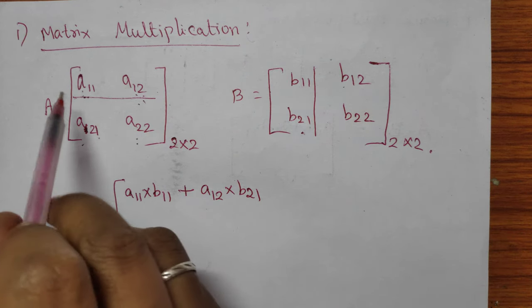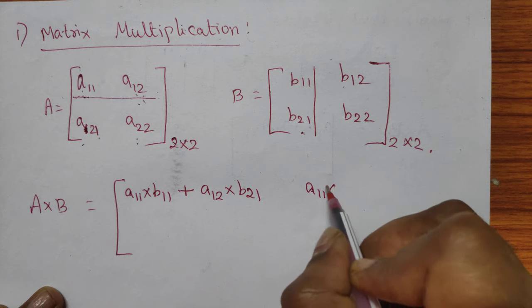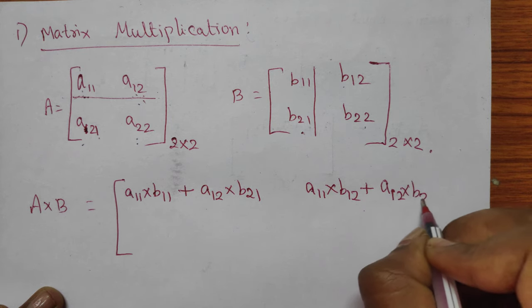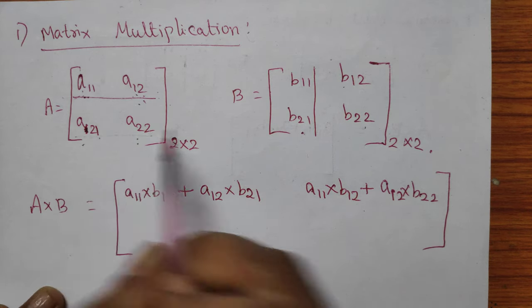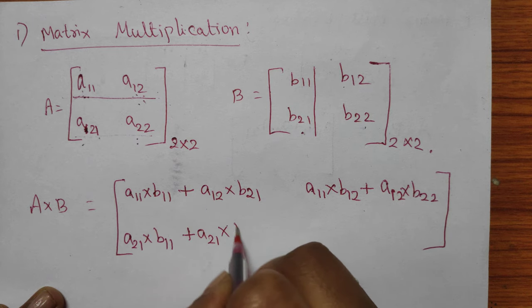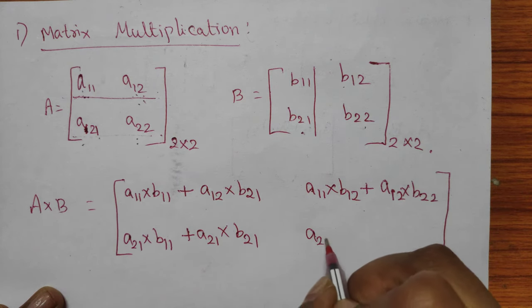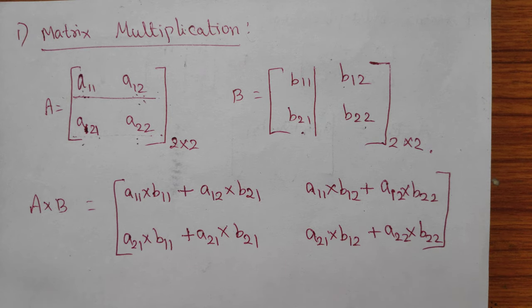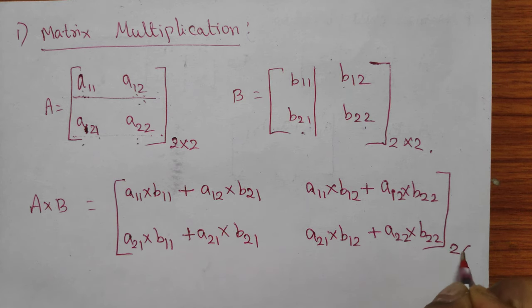Likewise for the second element, we perform first row and second column: A11 into B12 plus A12 into B22. For the third element, second row and first column: A21 into B11 plus A22 into B21. For the fourth element, second row and second column: A21 into B12 plus A22 into B22. We add the products and the final result will be in a 2x2 matrix.